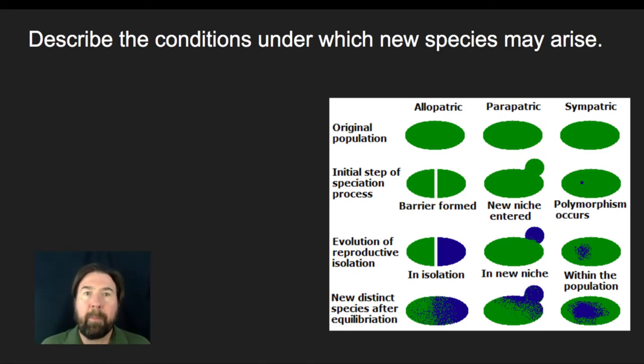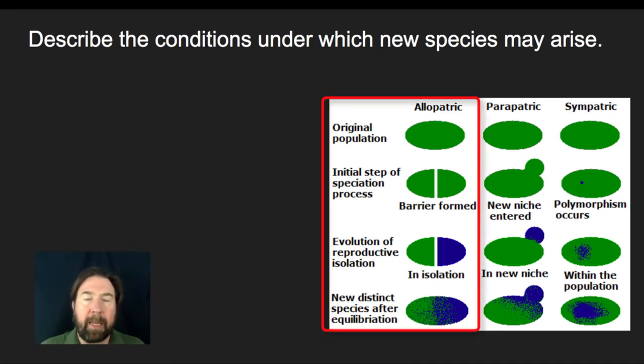All right, so the question then becomes, how do new species arise? And the reality is that there's a variety of different ways in which we will see a new species arise from a foundational species. We generally group these into a couple of different forms, one of which is called allopatric speciation. Allo is going to refer to different, and patria refers to homeland.